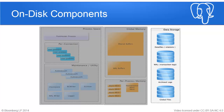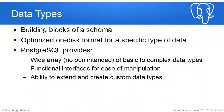Archive logs move transaction logs to a different location. Global files exist because there are certain areas global to all databases, such as user permissions. Now for data types — Jim and I actually put together a three-hour talk that takes about four hours to complete just on data types in Postgres. We're going to scratch the surface and cover as much as we can in about five minutes.